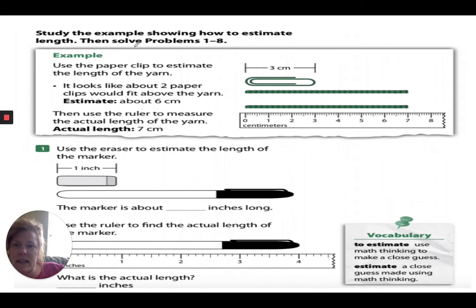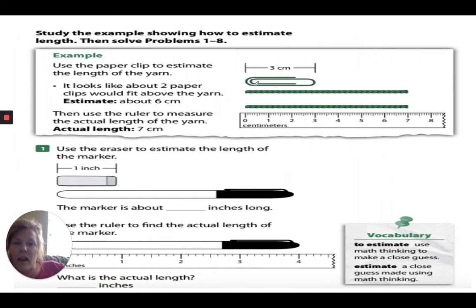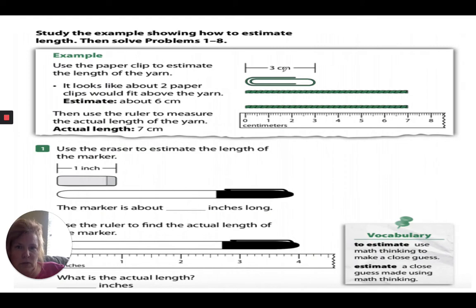Study the example showing how to estimate length, then solve problems one through eight. We're using a paper clip to estimate the length of yarn. You look at the paper clip and estimate how many it would take to measure the yarn. Looking at this, I think it would take two — so I'd say two paper clips. It says it looks like about two paper clips would fit above the yarn, so estimate about six centimeters, since each paper clip is three centimeters: three plus three equals six. Remember, estimate is just a fancy word for guess.